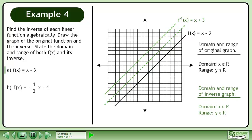The domain of the original graph is x belongs to the set of real numbers, and the range is y belongs to the set of real numbers. The domain and range of the inverse is found by swapping the original domain and range.